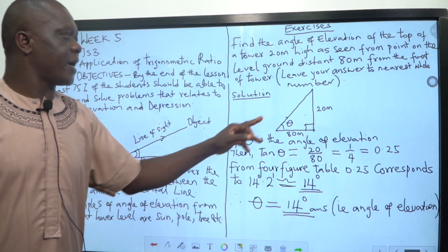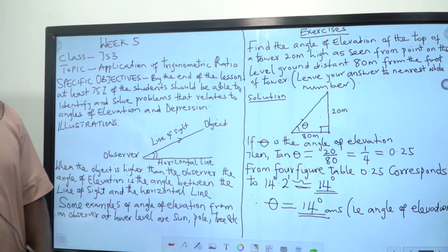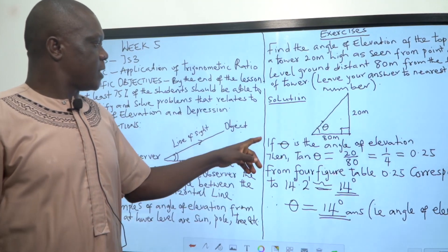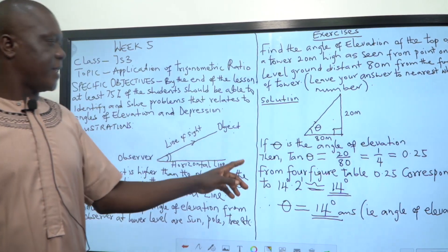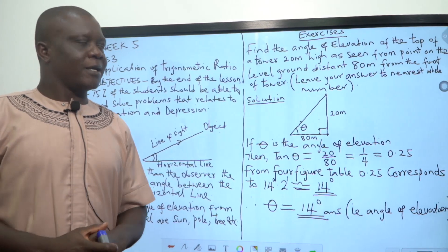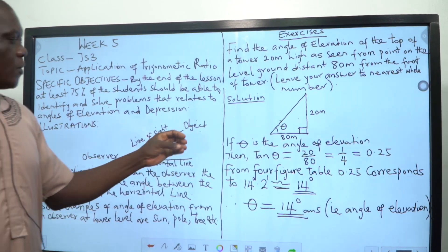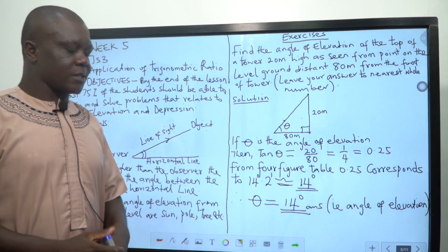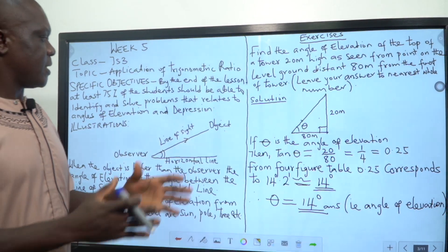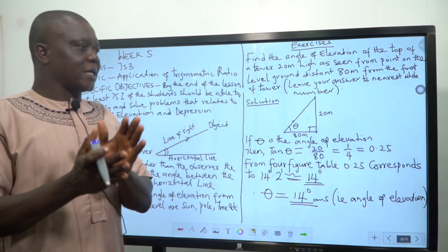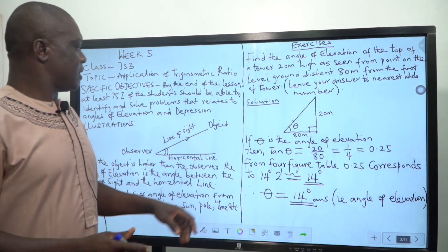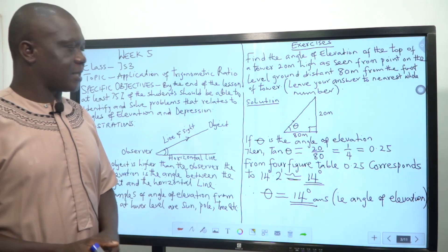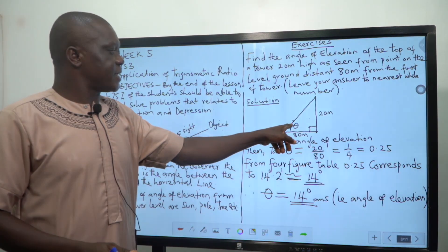This line here is now standing as the tower we are talking about. This is the angle of elevation. If you compare this diagram with this, you can see that's where the observer is standing, where the angle of elevation formed, which we term as theta. This is the line of sight, and the triangle we are using is the right angle. If you can recall during our second term exercise, I showed you how to find the opposite, the adjacent, and the tangent. For tan, tan is opposite over adjacent.